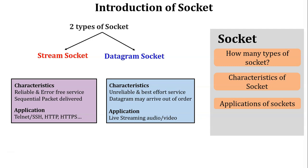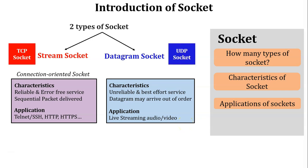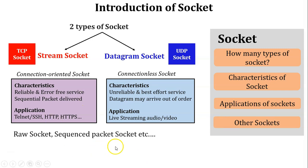Based on characteristics and applications, stream socket is associated with TCP, also known as the connection-oriented socket. Datagram socket is associated with UDP protocol, also known as the connectionless socket. Other sockets include raw socket and sequence packet socket. Raw socket is associated with UDP or datagram socket, and sequence packet socket is associated with TCP or stream socket.